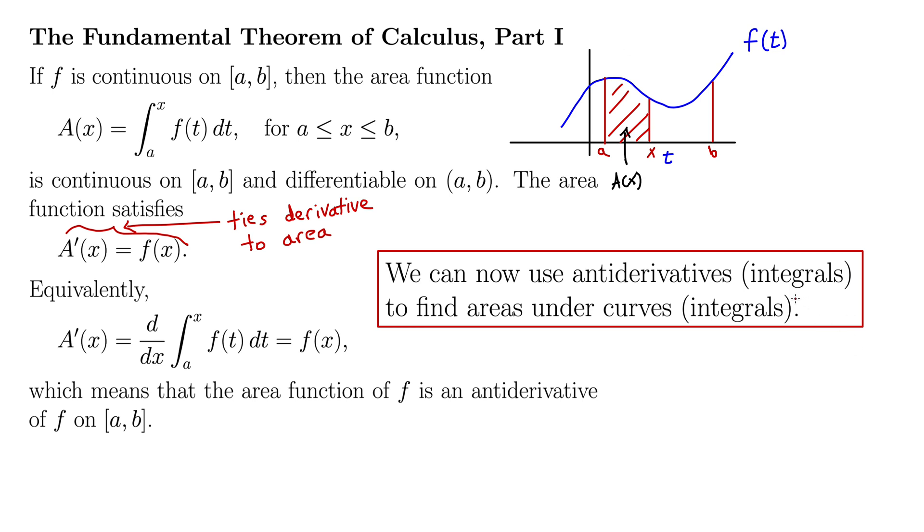Right? We should even probably put an exclamation point in here, because it's such a big result. Because from here on out, we don't need to use these tiny rectangles anymore. We can simply use the anti-derivative. And the fundamental theorem of calculus tells us that the anti-derivative and the tiny rectangles are the same thing. And personally, I'd much rather compute an anti-derivative than compute the sum of an infinite number of infinitely thin rectangles. So this really opens everything up.